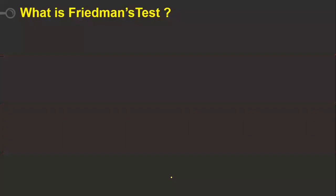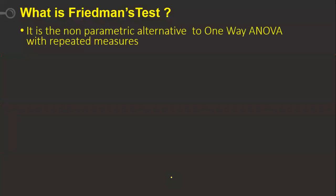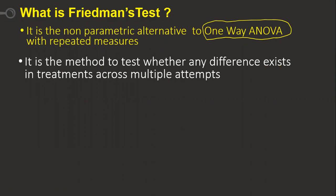So what is the Friedman's test? It is a non-parametric alternative to one-way ANOVA with repeated measures. If you do not know how to calculate one-way ANOVA, kindly visit our channel — there is a separate video for it. We'll be finding out ranks in this particular type of problem. It is a method to test whether any difference exists in treatments across multiple attempts.